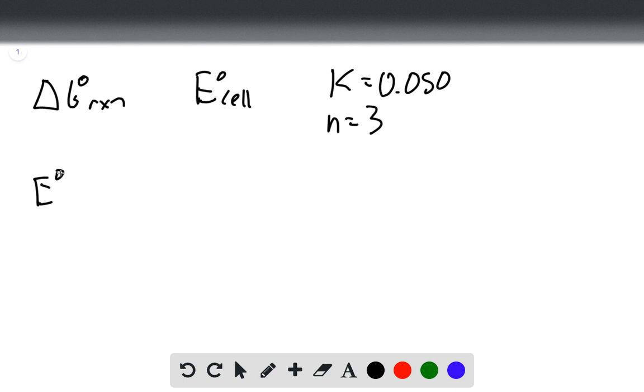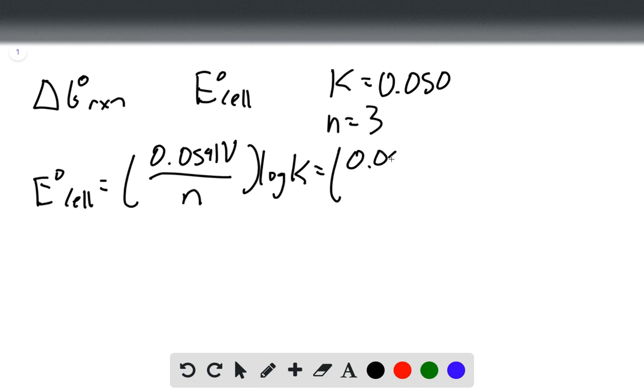The first thing we can do is find the E cell. We know that under standard conditions, E°cell equals 0.0591 volts over n times the log of K. If we plug in our values, we have 0.0591 volts over 3 times the log of 0.050.